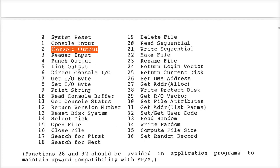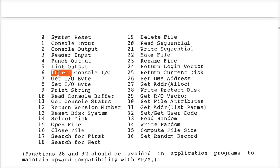You can use function number 6 if you want to interact with the console without waiting — this is great for games. If you have a key that means move left and another that means move right, but you want to keep updating the screen without waiting for keys, you might use routines in here. There's also how to use your paper tape reader and punch, how to print on the printer, and so on.